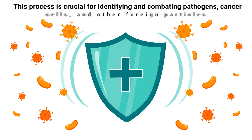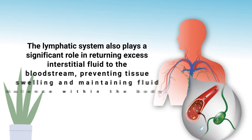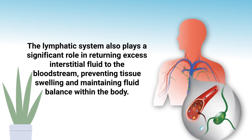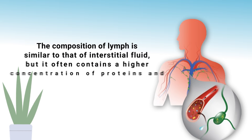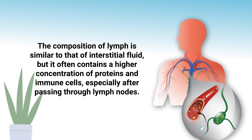This process is crucial for identifying and combating pathogens, cancer cells, and other foreign particles. The lymphatic system also plays a significant role in returning excess interstitial fluid to the bloodstream, preventing tissue swelling and maintaining fluid balance within the body. The composition of lymph is similar to that of interstitial fluid, but it often contains a higher concentration of proteins and immune cells, especially after passing through lymph nodes.